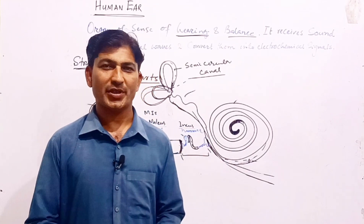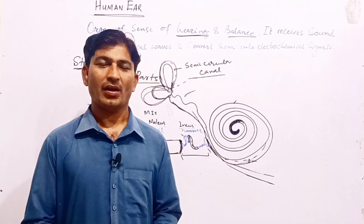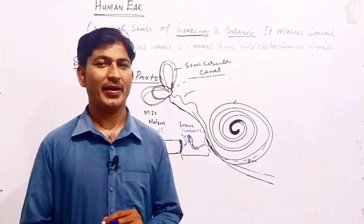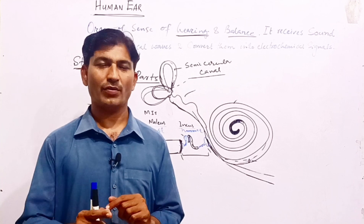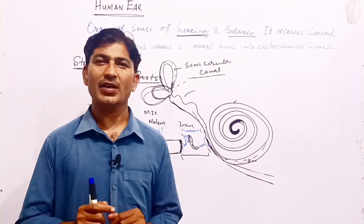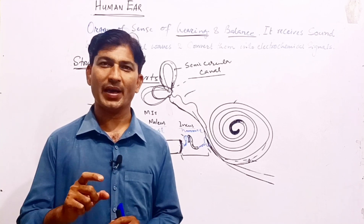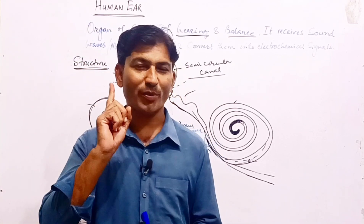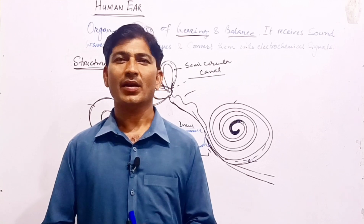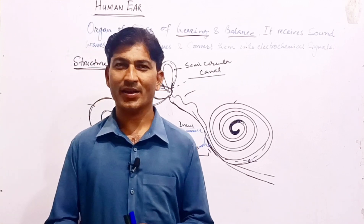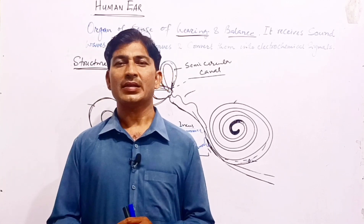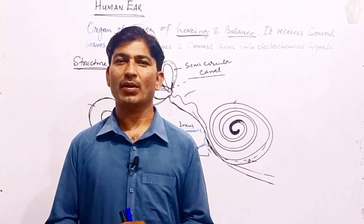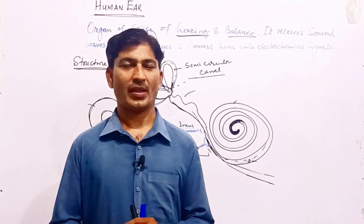Hey dear disciples, welcome back to the YouTube channel. How are you? You are hearing me but I am not hearing you because your voice is not coming to me. If I ask you a question: which organ of the body helps us in hearing? Obviously we have an organ inside our body that is called the human ear. The human ear is the organ of hearing — the organ of the sense of sound receiving. In today's topic we are going to learn about the human ear.